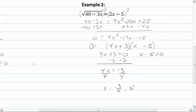So we have √(40 - 3 × (-3/4)) = 2 × (-3/4) - 5. So we have √(40 + 9/4) equal to -3/2 - 5.